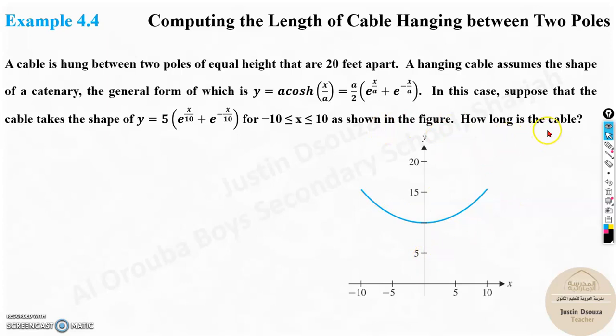How long is the cable? It's very simple because the equation is just given. You need to understand this cable is hung at -10 and at +10, so we need to find the distance. It's 20 feet apart, so -10 to 10 is 20 feet apart.